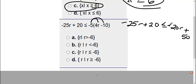Then I still need to get my r's together. So first I'm going to add 20r to both sides. So negative 25r and a positive 20r gives me negative 5r. I still have plus 20 is less than or equal to. This side it's gone. So I still have that 50.